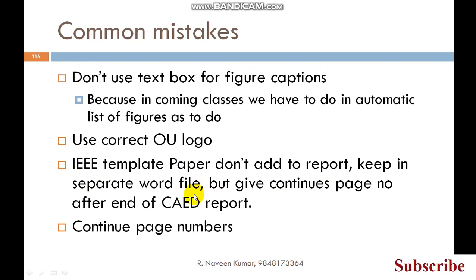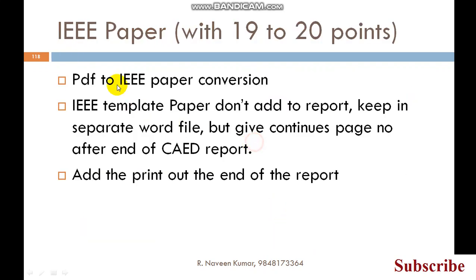You have to submit both copies. The thing to remember is: after completing references — for example, if the reference ends at page number 35 — you have to continue the page number for the IEEE paper starting at 36. How to insert that I will explain in the next slides. The IEEE paper, which has 19 points we have created, that PDF-to-IEEE paper conversion you keep at the end of the report and print separately from that Word file.